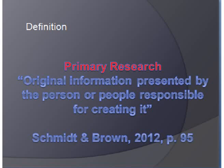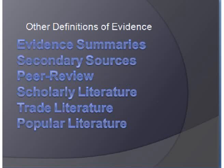The definition of primary research is original information presented by the people who were responsible for creating it. The researchers who did the research are presenting their original research results. This is important because ethically and morally in scholarly literature, researchers don't present their research findings multiple times in multiple journals — they do it in one journal. So primary research is the original data being reported by the original researchers. There's no easy way to identify that, and a lot of other definitions of evidence confuse us.